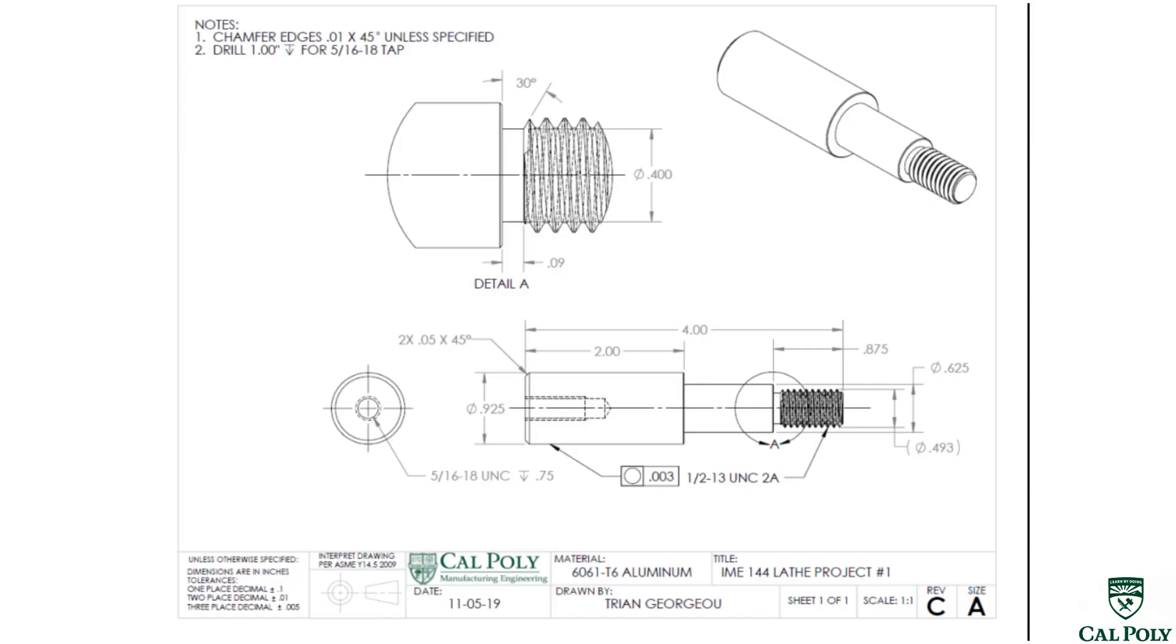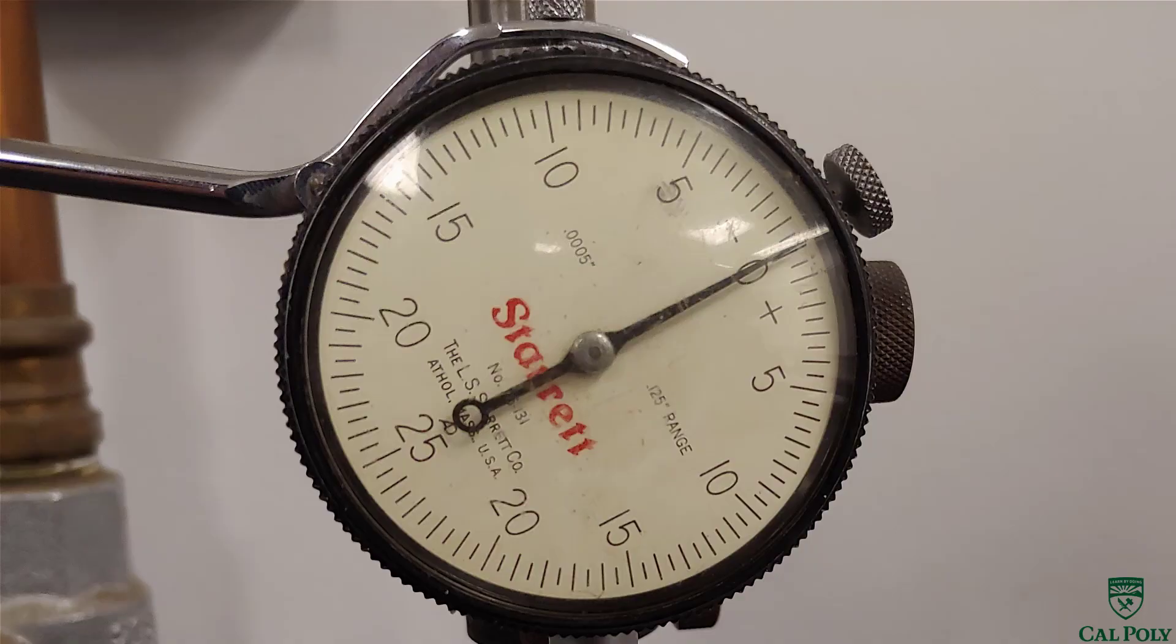Our GD&T callout for the circularity on this part shows three thousandths of an inch. This means that the total movement of the needle should not exceed three thousandths of an inch or six graduation lines. This is the total sweep of the needle. This means that the needle may go in both negative or positive direction, but cannot exceed three thousandths of an inch total.